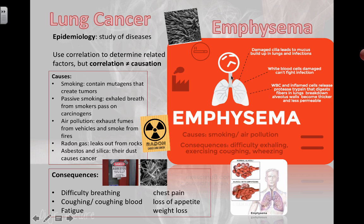Damaged cilia in the trachea lead to mucus buildup in the lungs. You've probably heard that sound of coughing up phlegmy stuff from smokers — that's mucus buildup. White blood cells get damaged and can't fight infection. If you've studied defense against disease, you understand the importance of white blood cells, B cells, T cells, and macrophages. Being prone to infection here leads to other types of respiratory diseases as well.